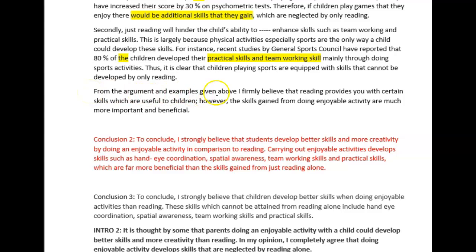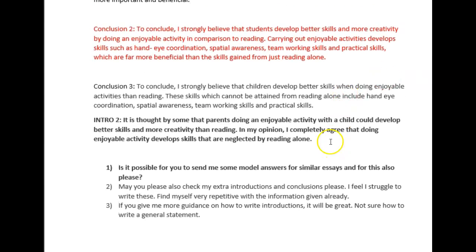This is one of your conclusions. You need to put 'In conclusion' here to show the examiner where you're going. 'From the arguments and examples above, I firmly believe that' — what I would say is: 'Whilst reading is undoubtedly important and beneficial to children, skills gained from doing an enjoyable activity with peer groups or with an adult are much more important and relevant in today's world.' The second conclusion is a little repetitive — I'd just run with the first one. You'll see from the sentence guide that it's quite a nice idea to add a prediction into your conclusion, which will come up in the next modules.